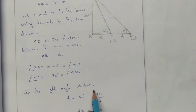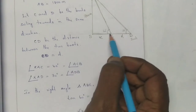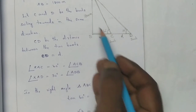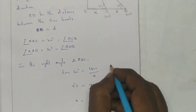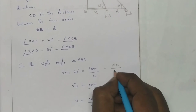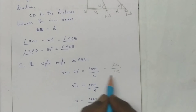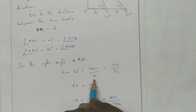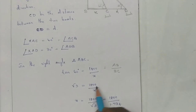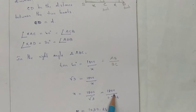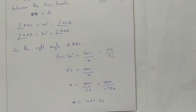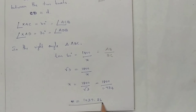In right angle triangle ABC, tan 60° equals opposite AB by BC. AB is the altitude measurement 1800, BC is x. tan 60° equals root 3, so root 3 equals 1800 by x. Cross multiplying, x equals 1800 by root 3. Root 3 value is 1.732, so dividing, x equals 1039.26.